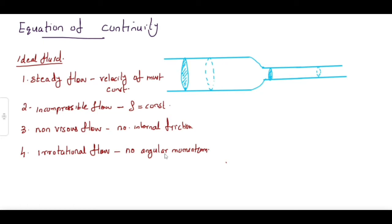To derive the equation of continuity, imagine a liquid flowing through a pipe. The fluid we are considering is an ideal fluid. Consider two regions of the pipe: the area of the first section is A1 and the area of the second section is A2. The velocity with which the fluid flows through the first section is V1, and the velocity through the second smaller area is V2.